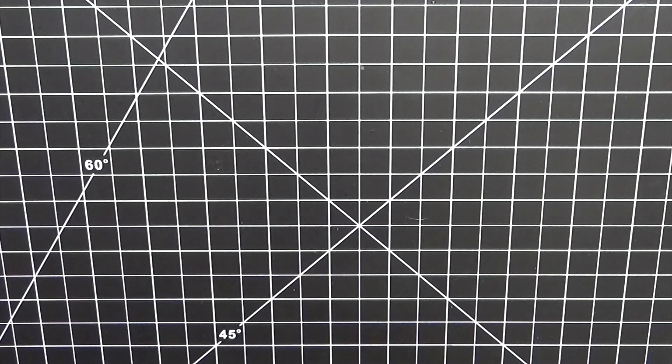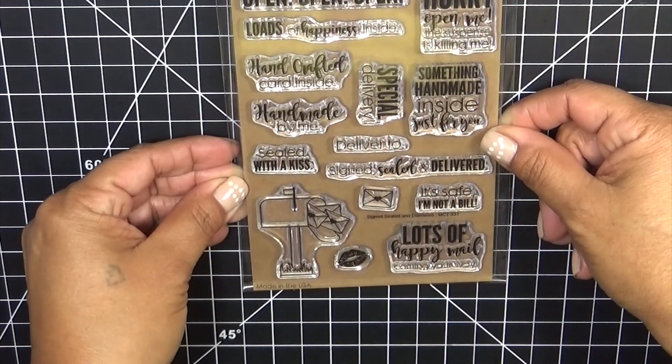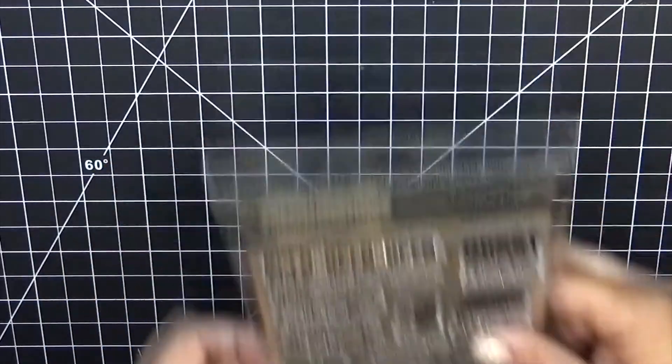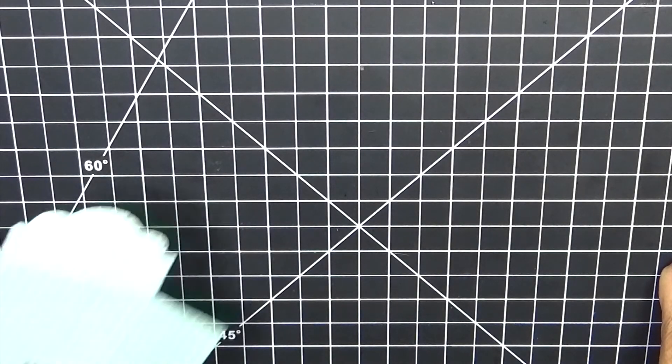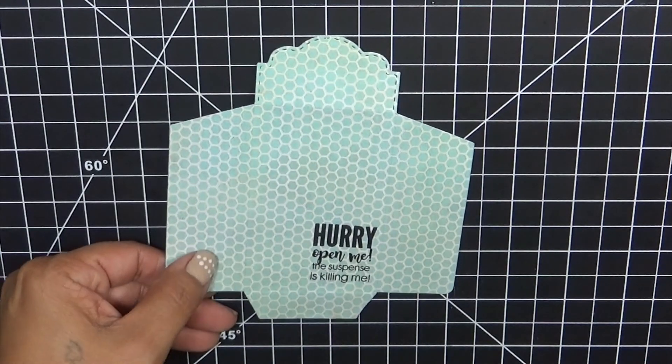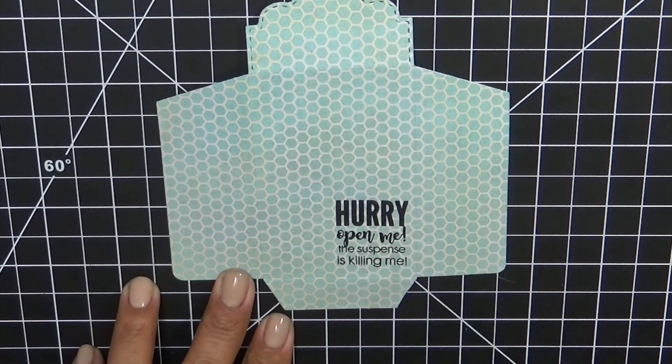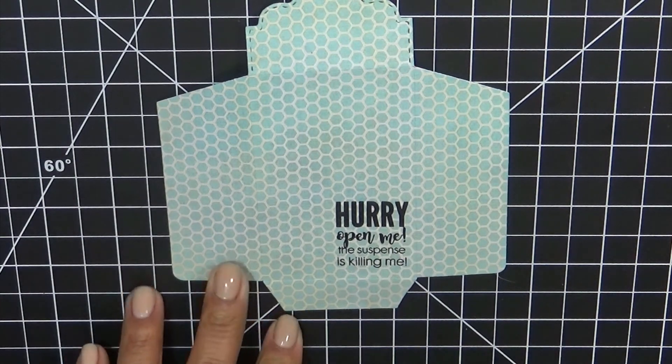I forgot to tell you the most important other thing I'm using is the one that we did for Flash Friday called Sign Sealed and Delivered. I already cut out and I stamped one of the sentiments from that new set Sign Sealed and Delivered.